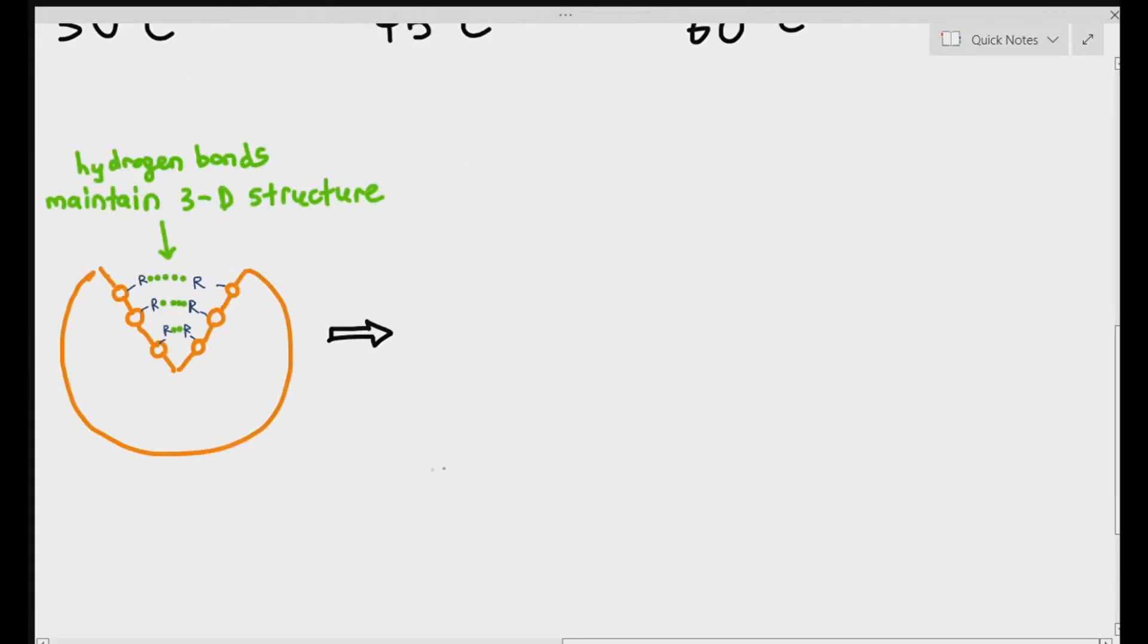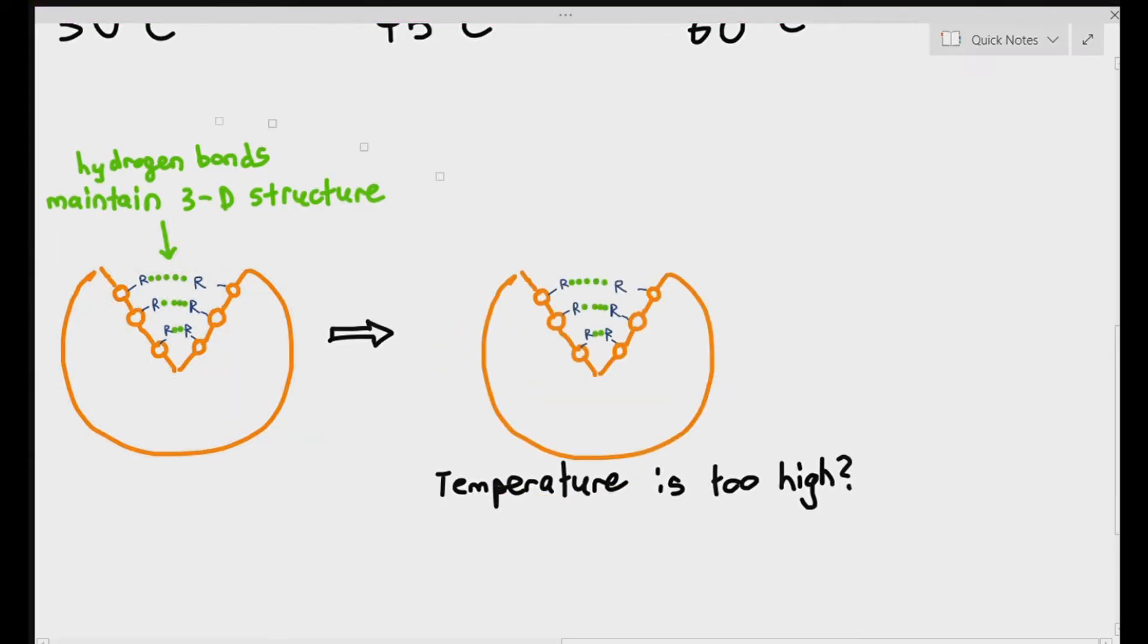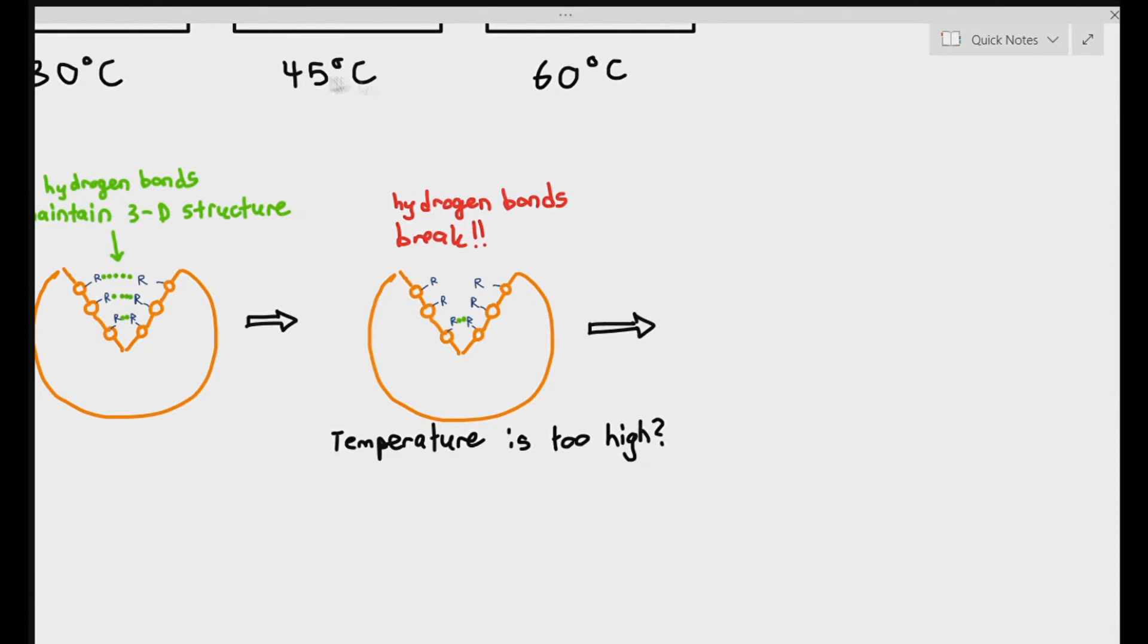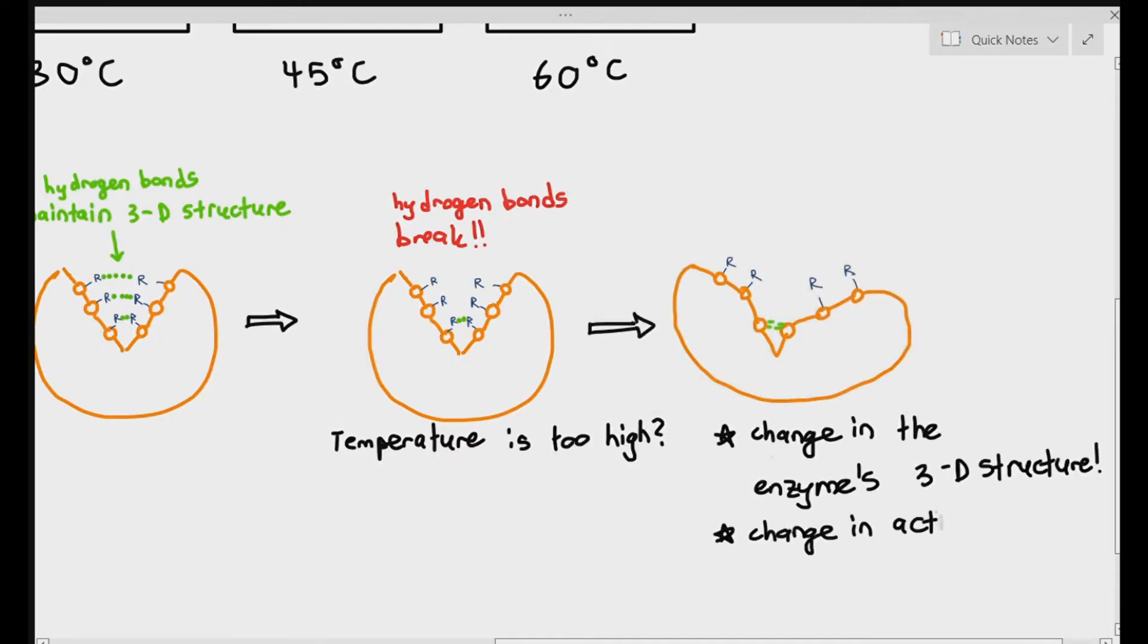For example, if you look at my active site over here, the active site is actually being maintained by some hydrogen bonds in the R groups. I just want you to see the hydrogen bonds are maintaining the shape of the active site. But if the temperature is too high, the hydrogen bonds will break. And when the hydrogen bonds break, the mouth will start to become wider. The active site shape will change.